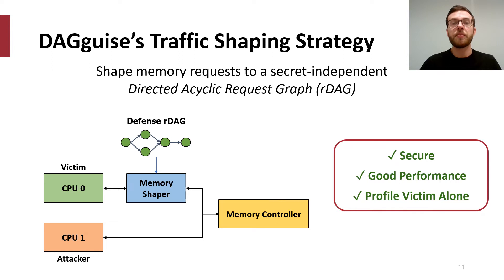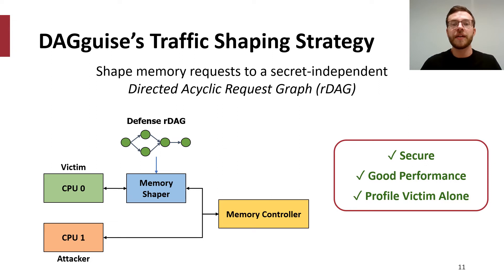Our work, DAG-Eyes, employs a different traffic shaping strategy. DAG-Eyes shapes memory requests to a secret-independent directed acyclic request graph, something we call an RDAG, and in doing so, DAG-Eyes is able to ensure security, attain good performance by allowing dynamic traffic contention, and does not have the same profiling issues as prior traffic shaping works. To understand how DAG-Eyes works, let's first discuss what an RDAG looks like.